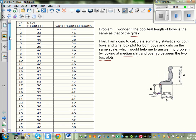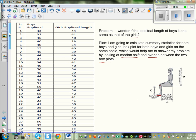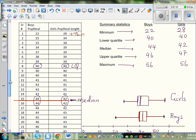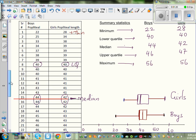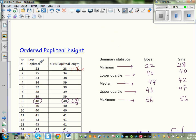So what I have done is already worked this out. The first thing that I have done is, this is unordered, the length of boys and girls are unordered. So what I did is I used Excel to order it and I have calculated the statistics. So this is the ordered popliteal height for boys and girls.